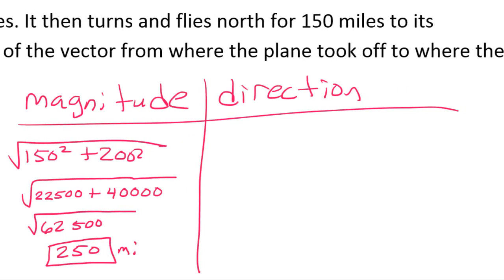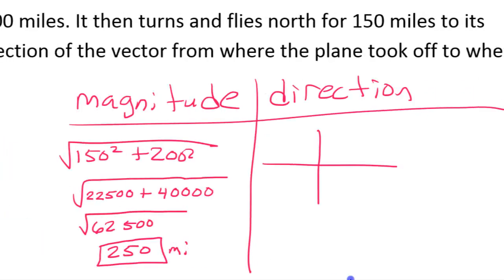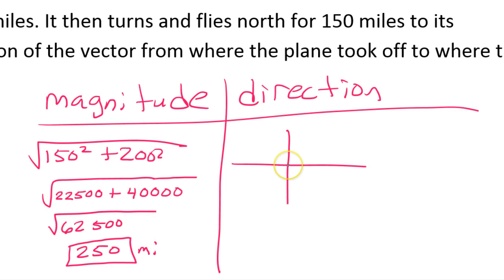Now how about the direction? For the direction, it's useful to make a diagram like this — a rough sketch is usually sufficient. We're going left and up from the perspective of this graph, so that puts us into the second quadrant. I'm just going to make a little triangle out of it, and I'm going to put a reference angle right here that we can find.